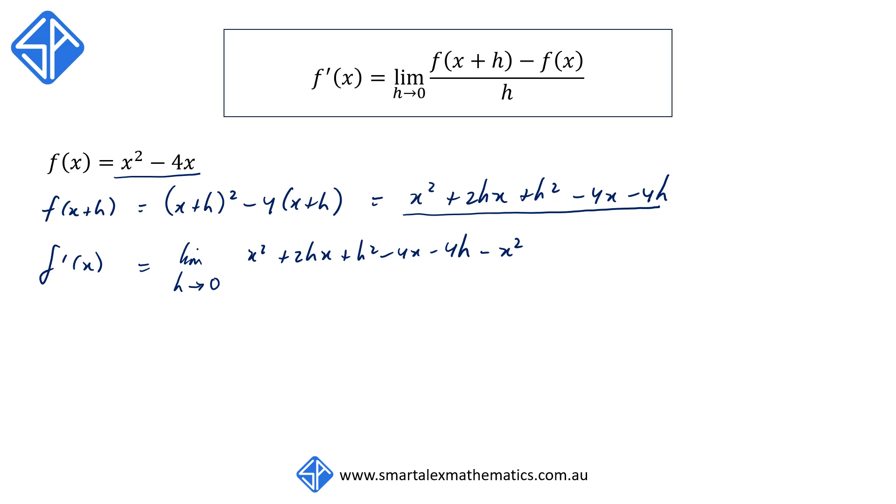Now, because we're subtracting, the negative in front of the 4x will become a plus 4x, and all of this is over h.